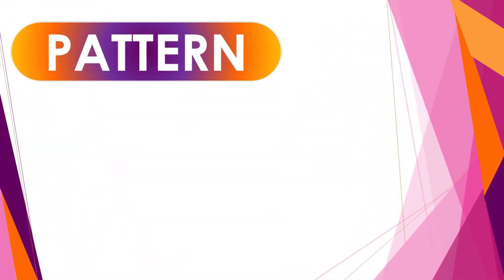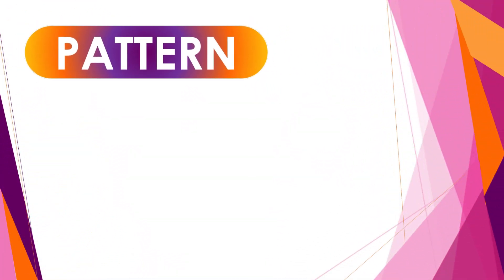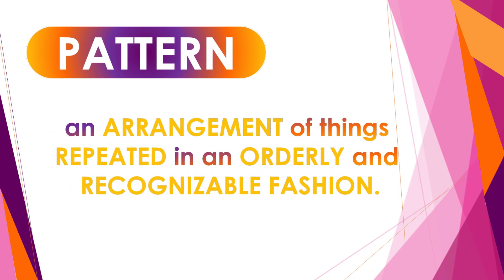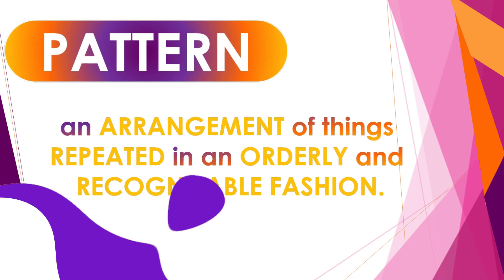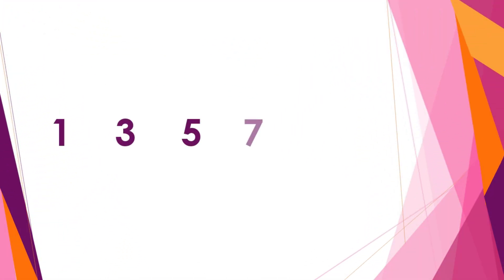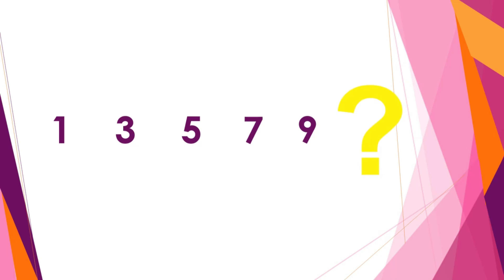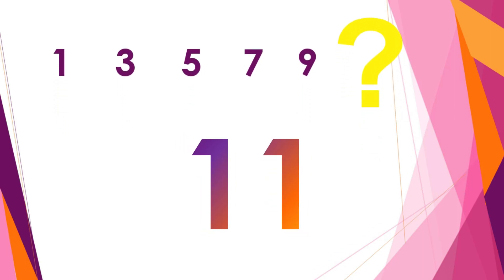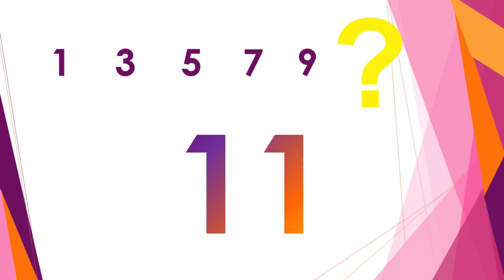So, what is a pattern? A pattern is an arrangement of things repeated in an orderly and recognizable fashion. If we try to look at the pattern, what will be the next number? Eleven. Why eleven? Because each term is obtained by adding two to the preceding term.